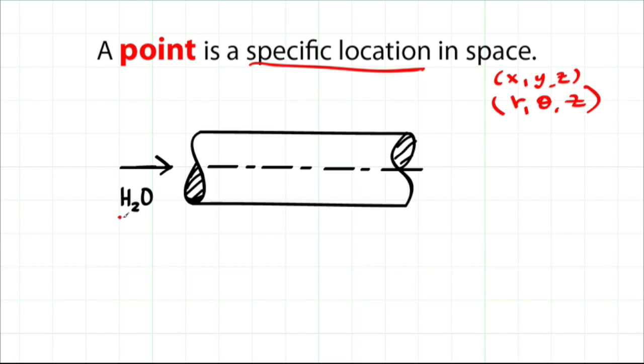So, for example, this shows water flowing through a round pipe, and I might be interested in the pressure right at this point. And so I'll label this point, point A, and I might write the symbol, the pressure at point A.